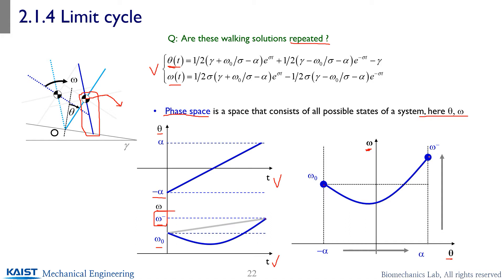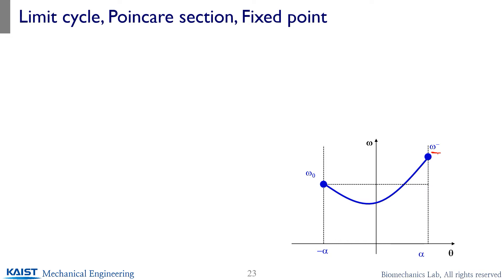What will happen at omega minus? A collision occurs, giving omega plus, reduced by a factor of eta. If this value equals omega naught, it turns into a steady-state value. After collision, you have a new stance leg, so you switch the state variable — from plus alpha, you switch to minus alpha angle. So you have a discrete change, and that's the phase space trajectory of your solution.